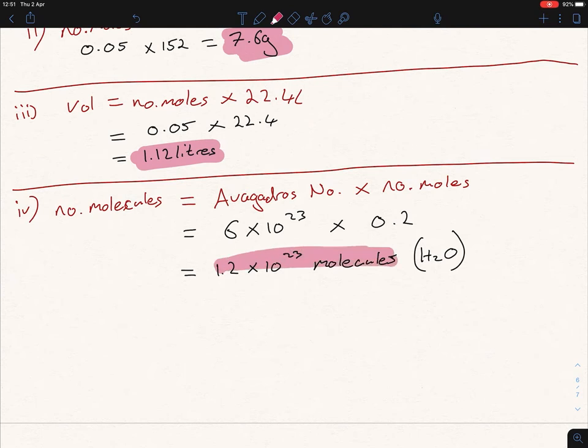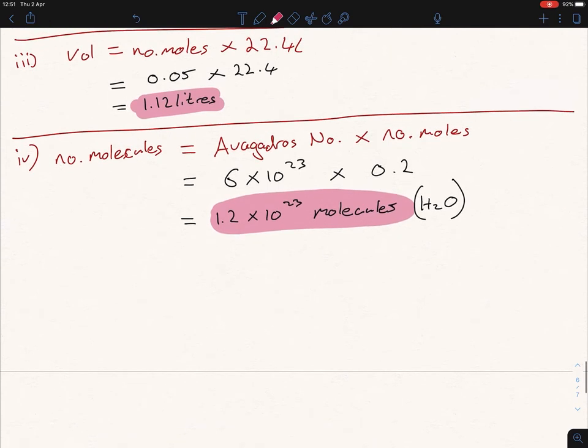So we have the first part there. We have the number of molecules. Now, if we look at the question here, we can see that we have 1.2 times 10 to the power of 23 molecules, and that in each molecule, you have three atoms. If you count them up, we have two hydrogens and one oxygen. So we have three atoms in each molecule there. So therefore, all you want to do then is 3 multiplied by 1.2 times 10 to the power of 23. And you want to get an answer of 3.6 times 10 to the power of 23 atoms.